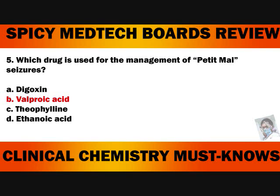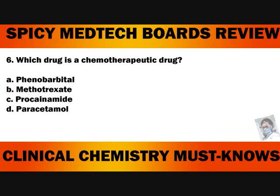Letter A, Digoxin, is a cardiac stimulant. Letter C, Theophylline, is a bronchodilator. Letter D, Ethanoic acid, is just another name for acetic acid. So letter B, Valproic acid, is an anti-epileptic drug used to treat petit mal seizures, or absence seizures.